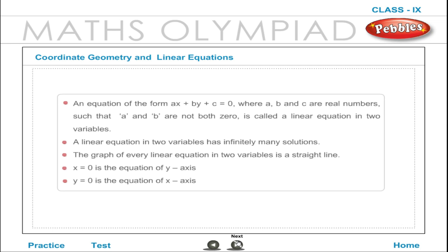An equation of the form ax + by + c = 0, where a, b, and c are real numbers such that a and b are not both 0, is called a linear equation in two variables. A linear equation in two variables has infinitely many solutions.